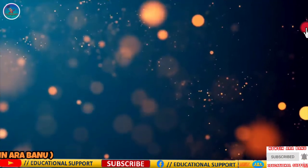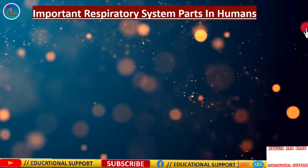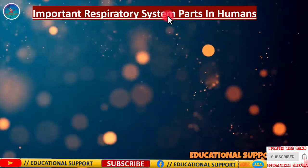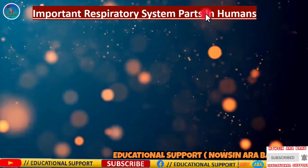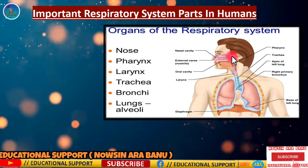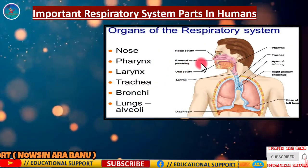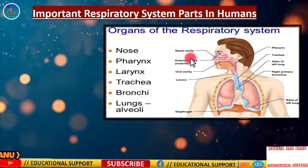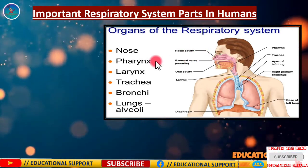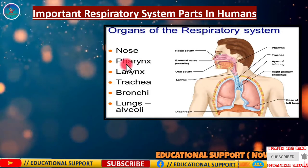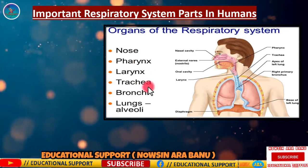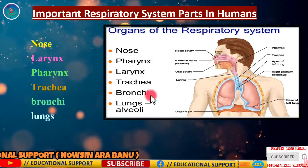The important respiratory system parts in humans include the nose, pharynx, larynx, trachea, bronchi, and lungs.